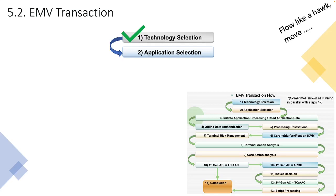Once the chip was inserted into the POS device, the POS device powered up the card and the chip. It read the multiple applications available on the card, and on the terminal it created a candidate list of mutually supported applications. It derived a meaningful user-friendly name — either the application preferred name or application label — which it then related to the candidate list and presented to Bob on the POS terminal screen. The cardholder then selected the relevant application they would like to use for the transaction.